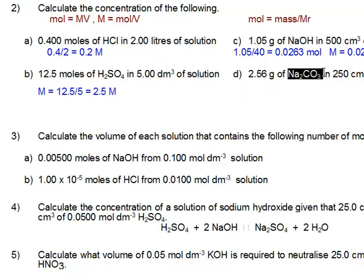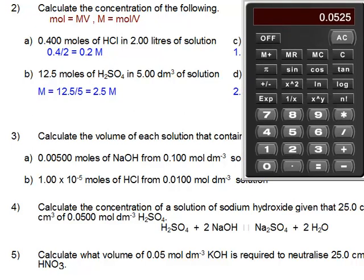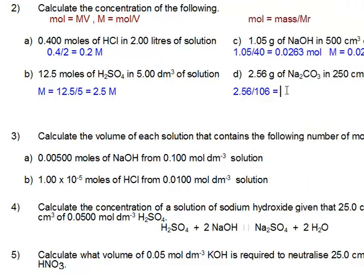Now we're going to get the relative formula mass of sodium carbonate. Well, that adds up carefully, it's 106. So it's 2.56 divided by 106. This gives the number of moles. Bring this in, 2.56 divided by 106. And that gives us the number of moles, which is 0.0242.